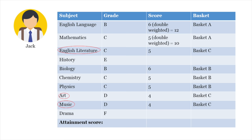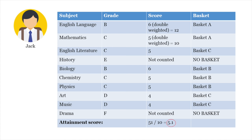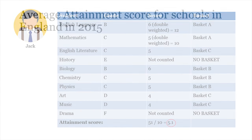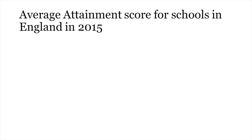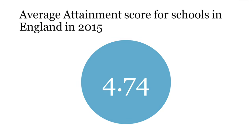They are counted in Basket C. If you add up his scores from the baskets, you get 51, which divided by ten gives Jack an attainment score of 5.1, which is just above a C grade. For an idea of how he performed, the average attainment score for schools in England in 2015 was 4.74.